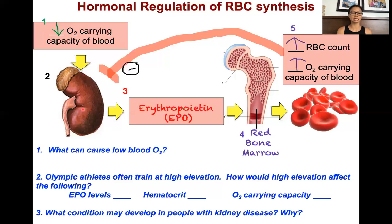In this case, the gland is the kidney. The kidney will release the hormone at step three called erythropoietin, or EPO. "Erythro" refers to erythrocytes, which is another name for red blood cells. "Poiesis" means to generate. So erythropoietin is the hormone that's going to generate red blood cells.